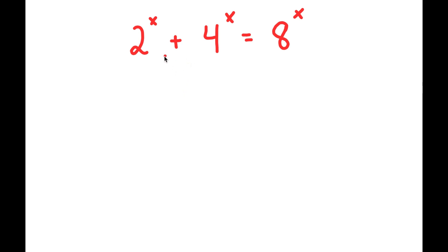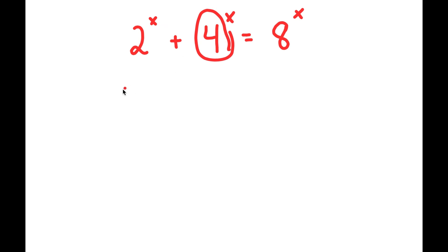So in this problem, I have 2 to the power of x plus 4 to the power of x is equal to 8 to the power of x. To solve this, I'm going to first rewrite 4 as 2 squared.